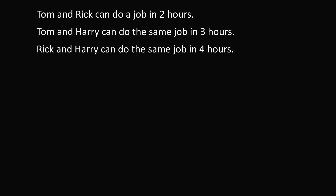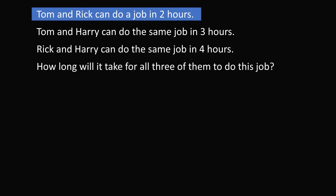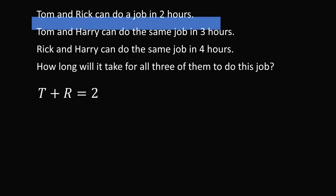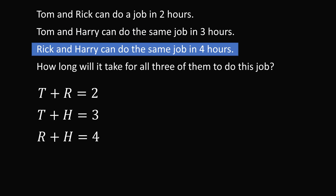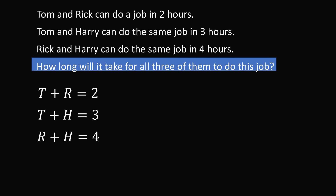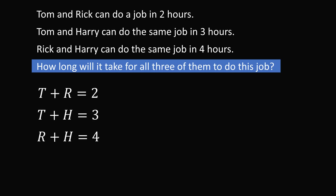Here's how many students approached the question. They looked at the first sentence — Tom and Rick can do a job in two hours — and translated it as the equation t plus r is equal to 2. They then translated the second sentence analogously as t plus h is equal to 3, and the third sentence would become r plus h is equal to 4. How long would it take for all three of them? That must be the sum of the variables, so you're trying to evaluate what t plus r plus h is equal to.